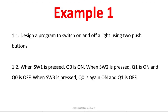Problem: design a program to switch on and off a light using two push buttons. Whenever you are designing a PLC program, the first step is to understand the question. The second step is to take the IO list — what are the inputs and what are the outputs. If you have clarity on that, it will be easy to write the program. Let's take the IO list for this problem.